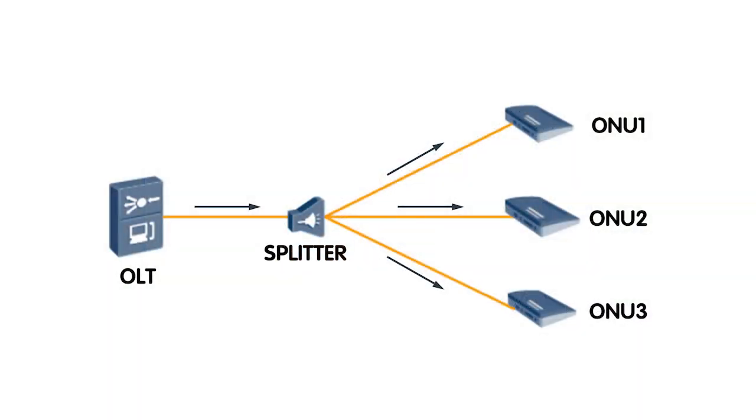The passive optical network, PON, is a technology that efficiently connects devices using optical fibers. It works by sending data signals using light waves, ensuring high-speed internet access. Utilizing PON technology in an IP camera system offers numerous advantages.